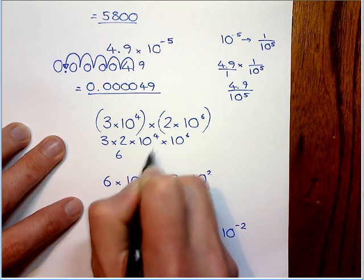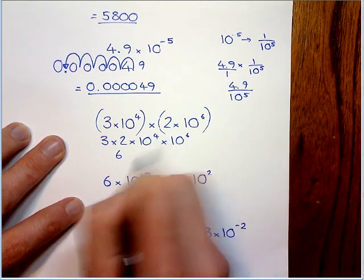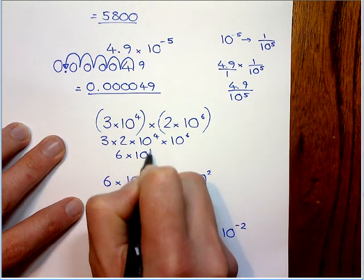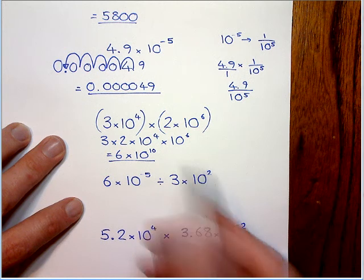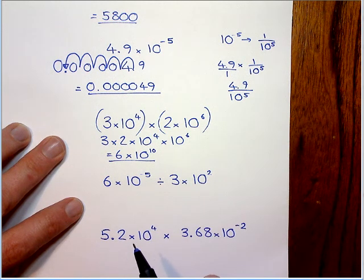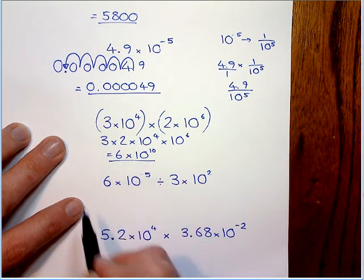And it makes it now a much easier problem. So three times two is six. And now we're timesing indices by the same base value so we can add the powers. So that's why I've got you to learn indices first because it overlaps into this topic here. So there we go. The number is between one and ten so I'm happy. And there we have it.